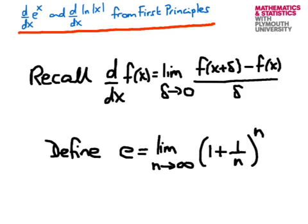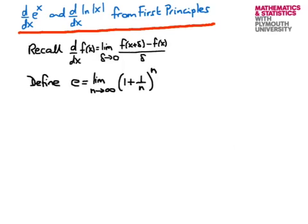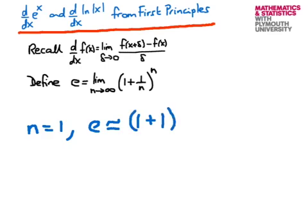Let's investigate this value of e for some different values of n. Starting at the lowest possible value, n equals 1: we obtain 1 plus 1 over 1, all to the power 1, which is 2 to the 1, so that's just 2.